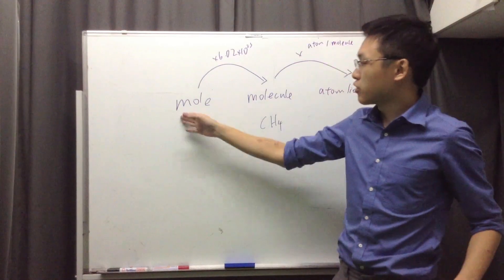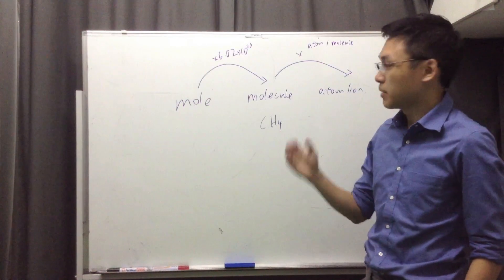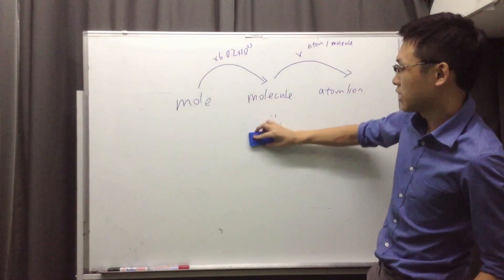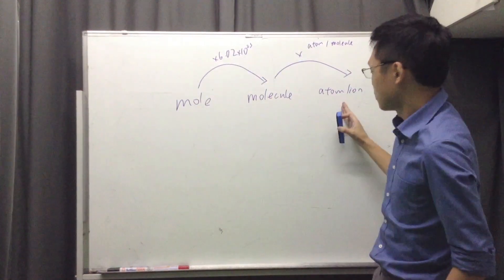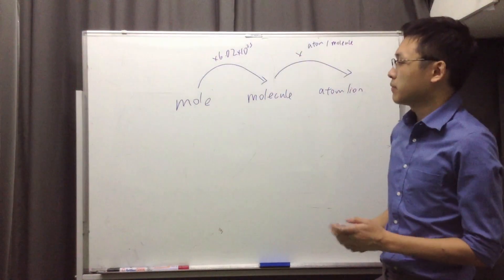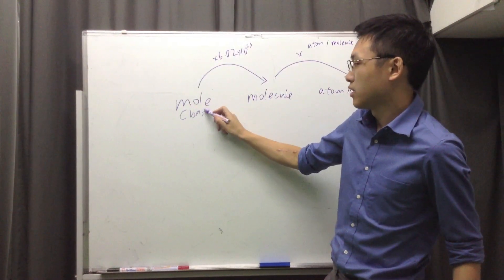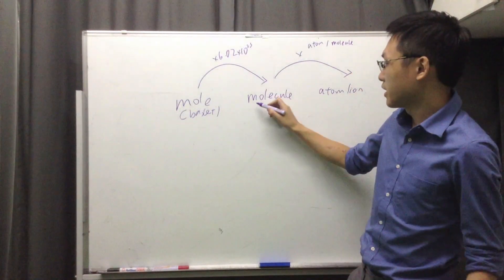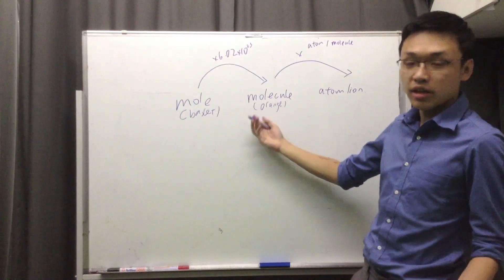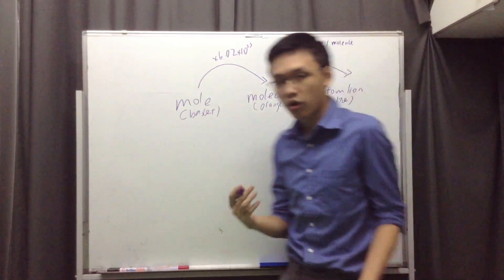So you notice here, if you want to go from moles to atoms, you cannot just multiply by one factor. You have to multiply by two factors. First of all, you need to get the number of molecules, and then you can get the number of atoms. So let me give you an analogy. It's just like saying, think of moles like a basket, and think of molecules like oranges. So in each basket, there are many oranges, and in each orange, there are many slices. Think of atoms or ions like a slice in an orange.